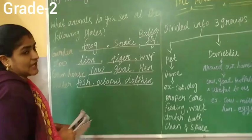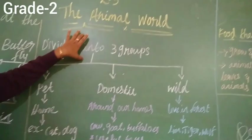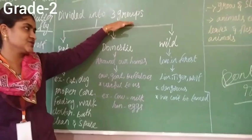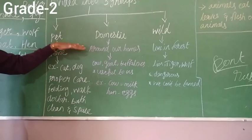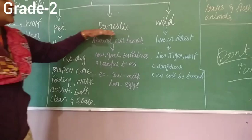Next, based on the animal's character, they are divided into three groups. The first one is a pet animal, the second one is a domestic animal, and the third one is a wild animal.